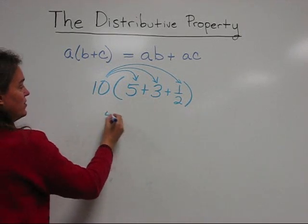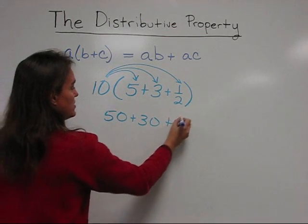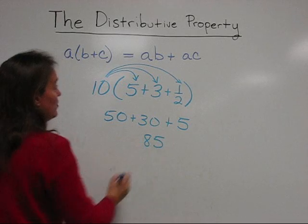10 times 5 is 50. 10 times 3 is 30. 10 times 1 half is 5. And when we add these up, we get 85.